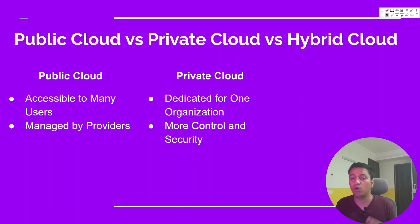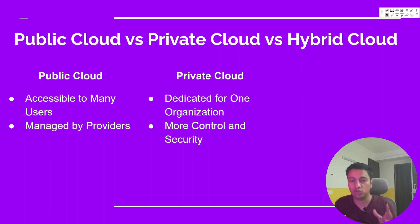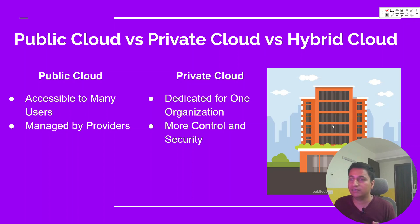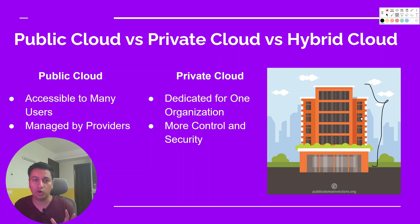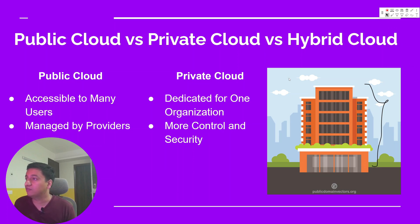Private cloud is dedicated to just one organization — the entire infrastructure is yours, which makes it more secure and gives you more control over the environment. There are two ways to set up a private cloud: you can set up your own data centers, or you can opt for a private cloud provider who handles the infrastructure for you. Going back to the building analogy — instead of sharing the building with other companies, the whole building is yours, giving you full security and complete control.